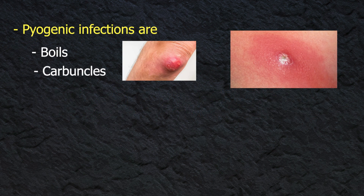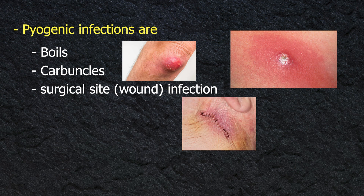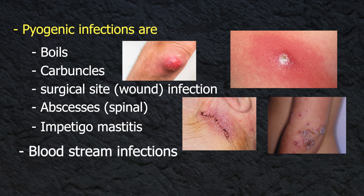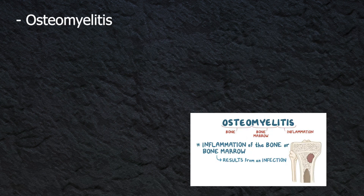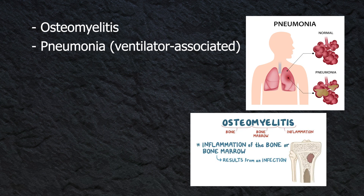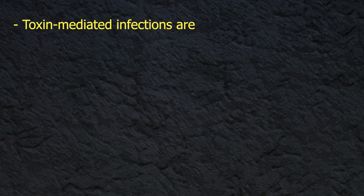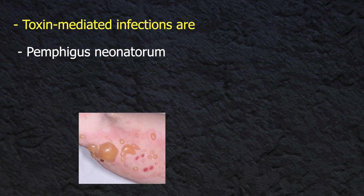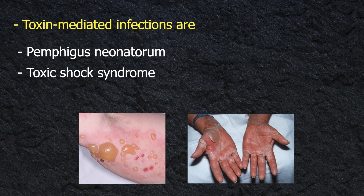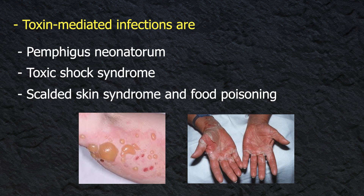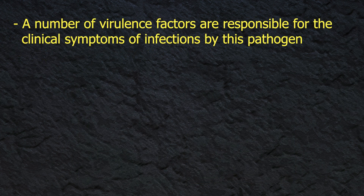Pyogenic infections include boils, carbuncles, surgical site wound infections, abscesses, impetigo, mastitis, bloodstream infections, osteomyelitis, pneumonia, ventilator-associated infections, and endocarditis. Toxin-mediated infections include pemphigus neonatorum, toxic shock syndrome, scalded skin syndrome, and food poisoning.